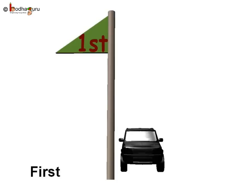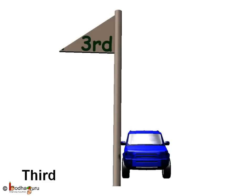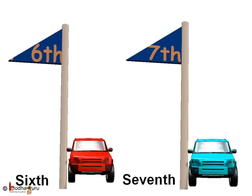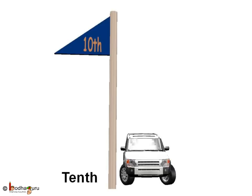Like, the black car came first. Here, 1st shows the position of the car in the race — it does not show the quantity of the car. Let us find out the position of other cars in the car race. The pink car reached after the black car, so we will say the pink car came 2nd in the race. The blue car came 3rd in the race. The green car came 4th. And the dark yellow car came 5th in the race. The red car came 6th. And the sky blue colored car came 7th. The light yellow colored car came 8th. And the maroon car came 9th. And the white car came last, that is, 10th in the race.